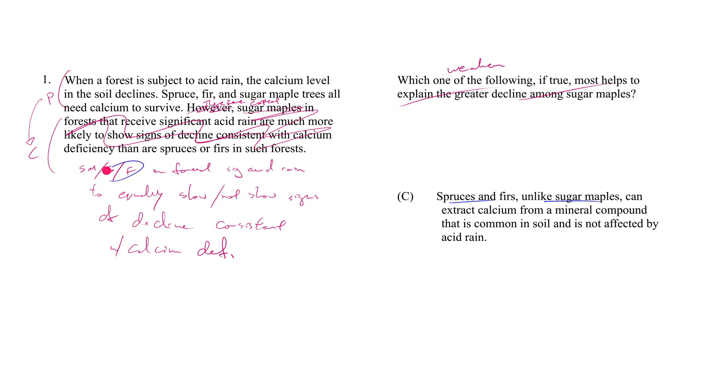C says spruces and firs, unlike sugar maples—so first of all, it just introduces different—these two things are not like this thing, because these two latter things can extract calcium from a mineral compound that's common in soil, which is not affected by acid rain. Which means even when there's acid rain, even when the soil is calcium deficient, spruces and firs have another source to tap for calcium that sugar maples don't.